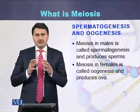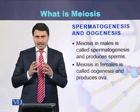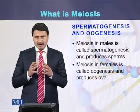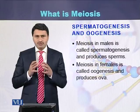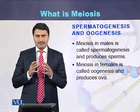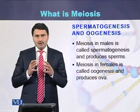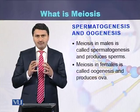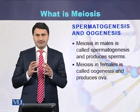Meiosis in males is called spermatogenesis, while meiosis in females is called oogenesis. As a result of spermatogenesis, sperms are produced, while as a result of oogenesis, ova or eggs are produced.